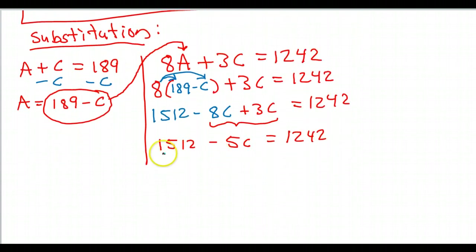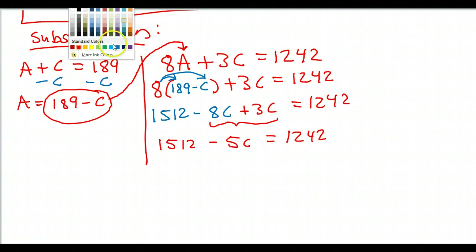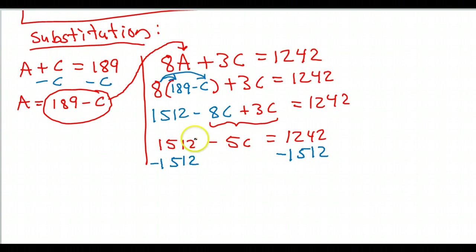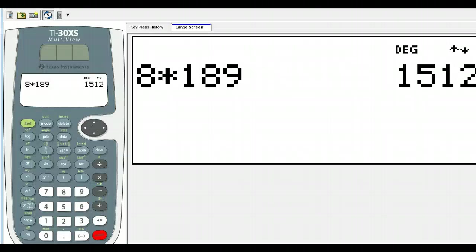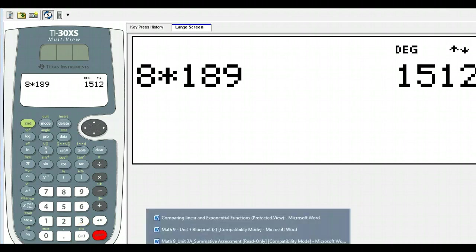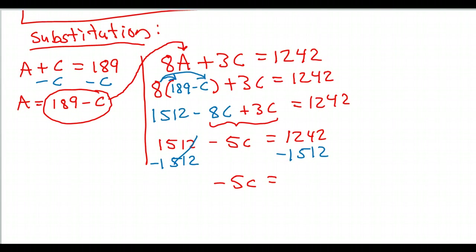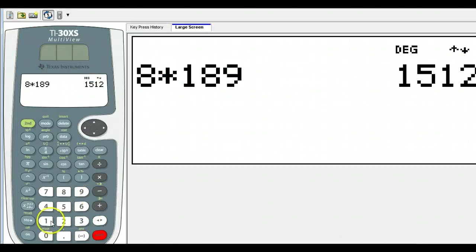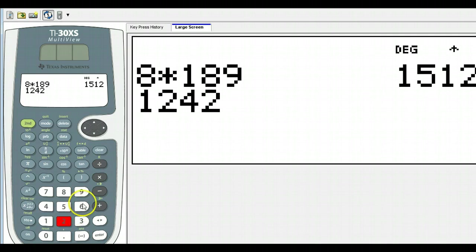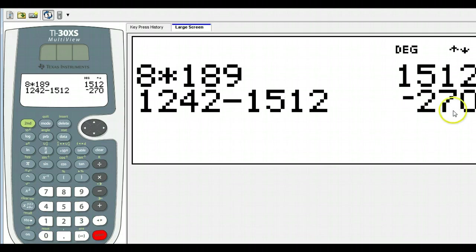Let's subtract this number. We're trying to get C by itself. So, let's go ahead and subtract 1,512 from both sides. That's going to give me negative 5C is equal to, you know, I should be able to do this in my head, but 1,242. I'm doing positive 1,242 minus that thing. So I've got 1,242 minus 1,512. That's negative 270.